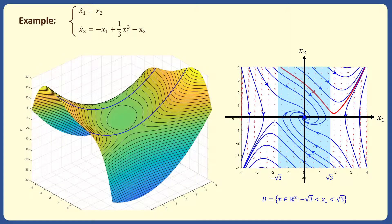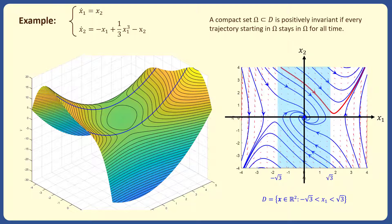This problem wouldn't have happened if we had started from a compact positively invariant subset within d. A compact set omega which is a subset of d is positively invariant if every trajectory starting in omega stays in omega for all time. Note that the set omega is formed by a level curve or a level surface of the Lyapunov function v. All points x1 and x2 on the boundary of omega satisfy v(x1, x2) equals 1. Since v-dot is negative definite on d, and therefore on omega which is a subset of d, no trajectory starting within omega can leave this set.